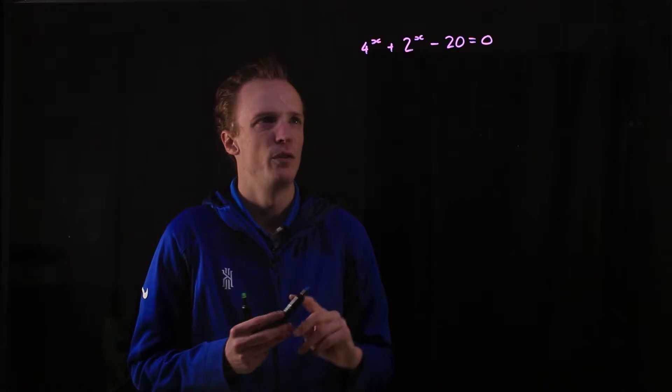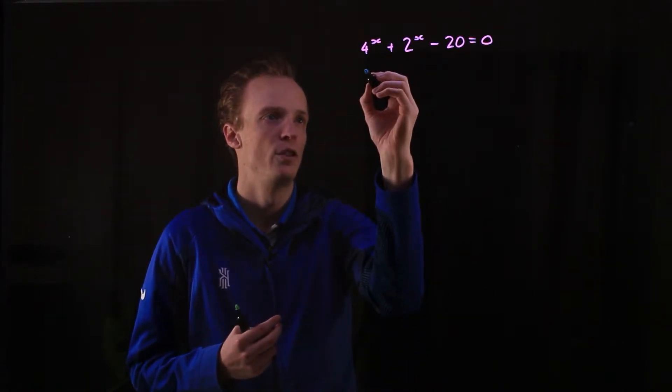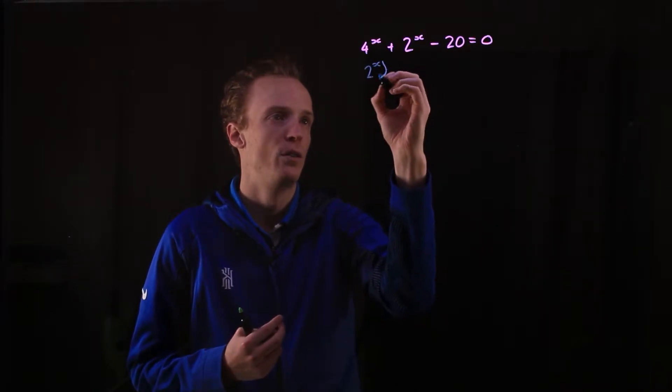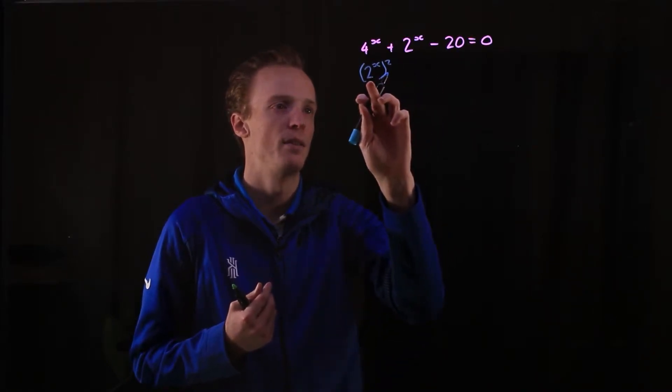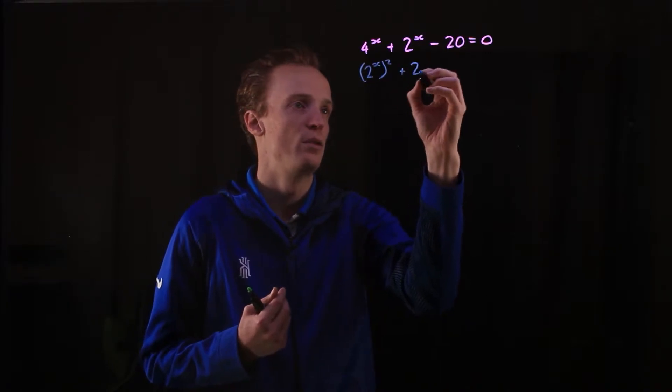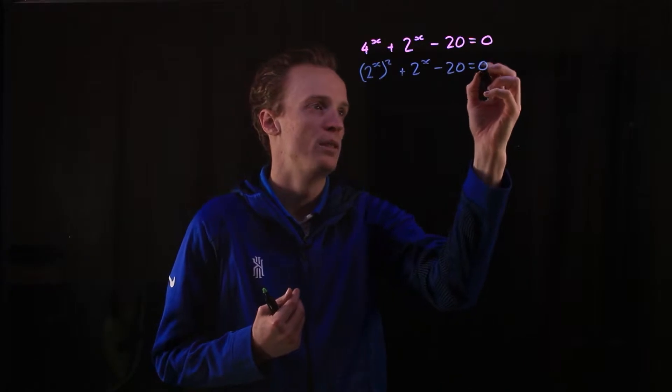To do that, I'm going to use the index law to rewrite 4^x, which can be rewritten as (2^x)^2. The advantage of doing that now is this middle term is the same as this part inside the brackets here. So I'm now adding 2^x minus 20 is equal to 0.